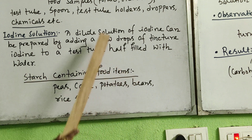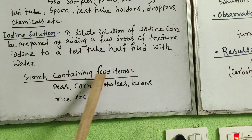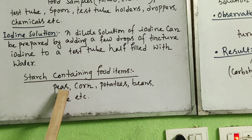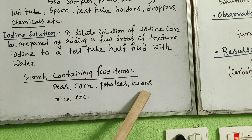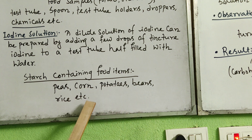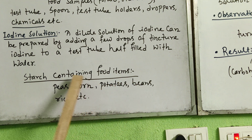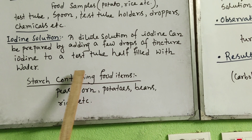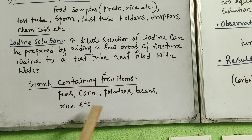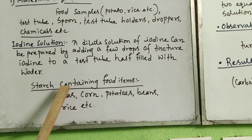Starch-containing food items already mentioned as food samples include peas, corn, potatoes, beans, rice, and many more. With these food items or food samples you can perform the test for the presence of starch.